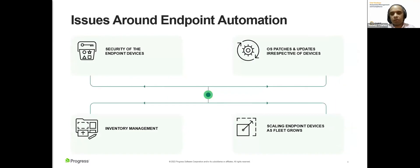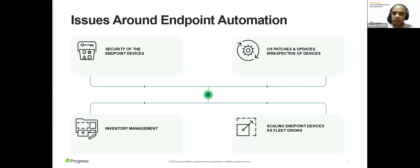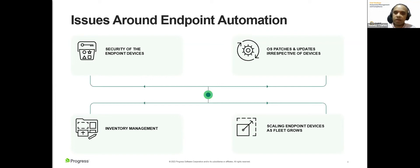What are the issues around endpoint automation? There are four: security, OS patches, inventory management, and scale. Protecting endpoints against malicious threats is a difficulty, and COVID-19 hastened working from home, exposing endpoints to a range of threats. Being able to limit the threat surface and remediate issues is critical. OS patches and updates are becoming more frequent, and maintaining device states as up-to-date at all times with minimal user inconvenience is also a challenge — making automation necessary.